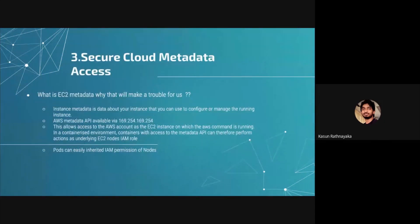The third thing — if somebody comes into your environment to do pen testing, they will look at this first: cloud metadata access. Cloud metadata is used to get details from the instance. If you're running an EC2 instance and you assign an IAM role to it, you can use the AWS metadata API to find out what permissions and details are assigned to that EC2.